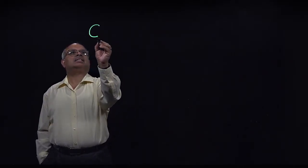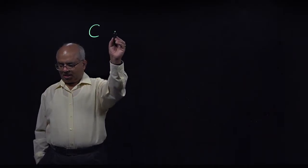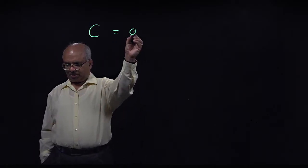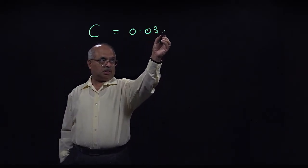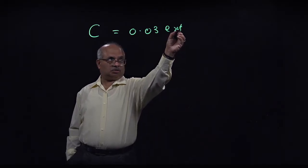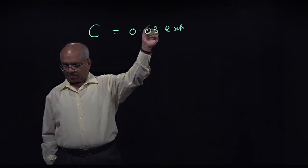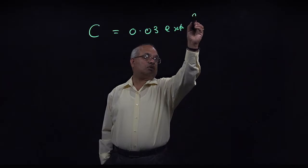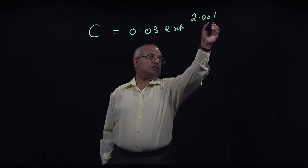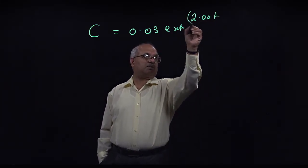Okay, let's take a look at another dimensional consistency problem here. Concentration is given by C equal to, let's say, 0.03 exponential 2 times t. If we have this expression.